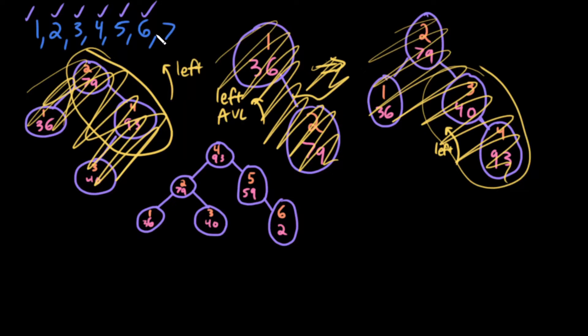Now for the last node, 7. I go right from 4, I go right from 5, I go right from 6. 7 goes here, and it gets a priority of 91, just randomly selected. So heap property is violated. 91 is greater than 2. So I need to do a rotation, a left rotation here.